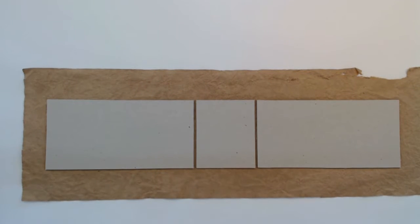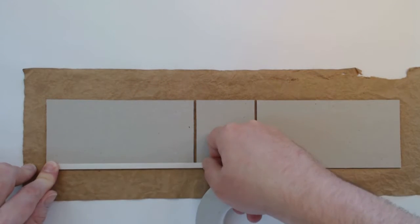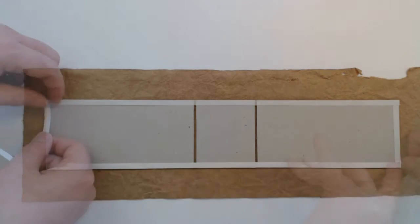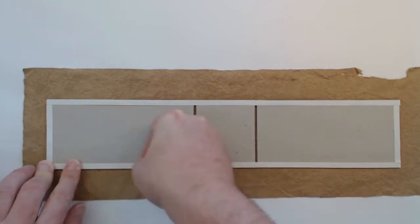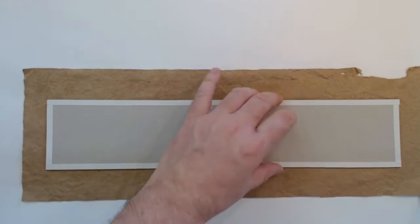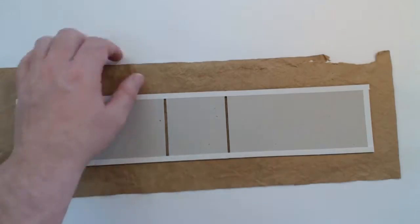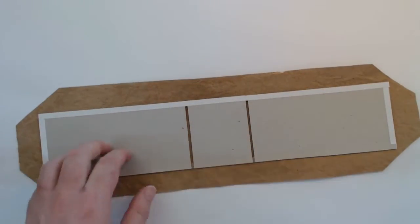And after everything is dry again, all the edges will be covered with double sided tape. Now I'm cutting back the excess to an inch, leaving an eighth of an inch at each of the corners.